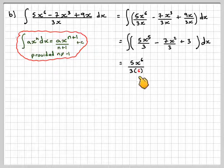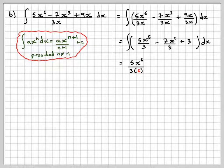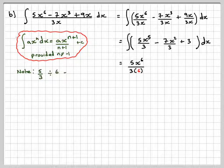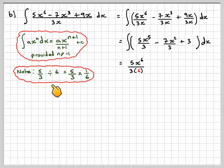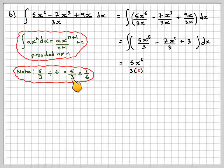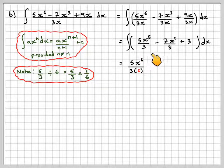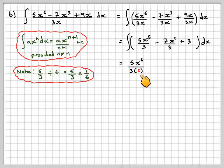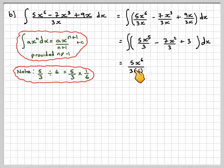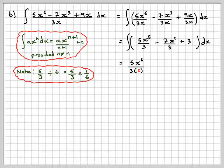Now why do we get that? Well, if you do 5/3 divided by 6 from your rule of fractions, that's 5/3 times 1/6. And what we're doing here is 5x⁶/3 all divided by 6. It's the same idea. So we put the 6 up here, and this is just something you need to just get used to.